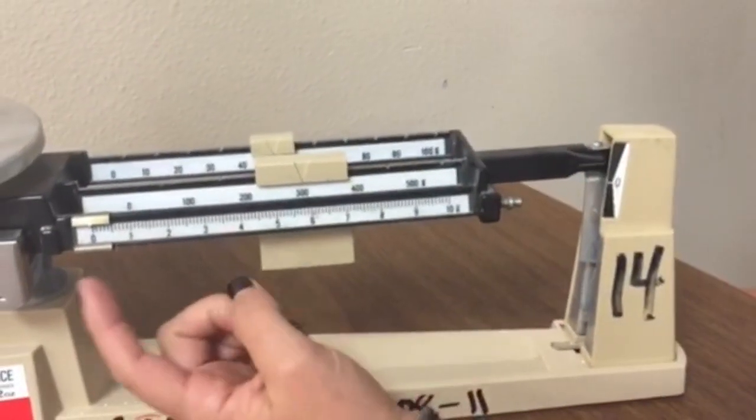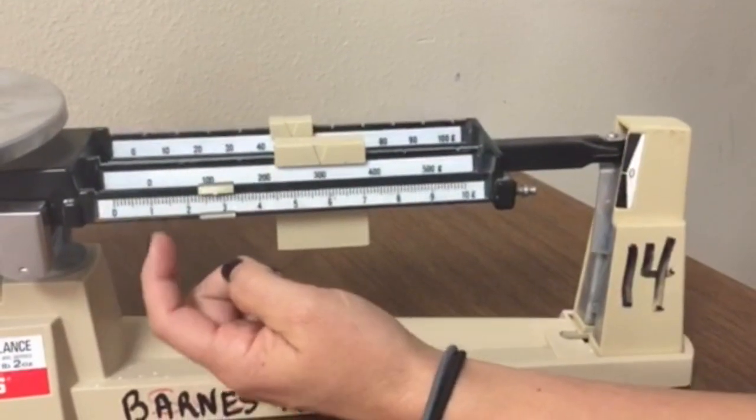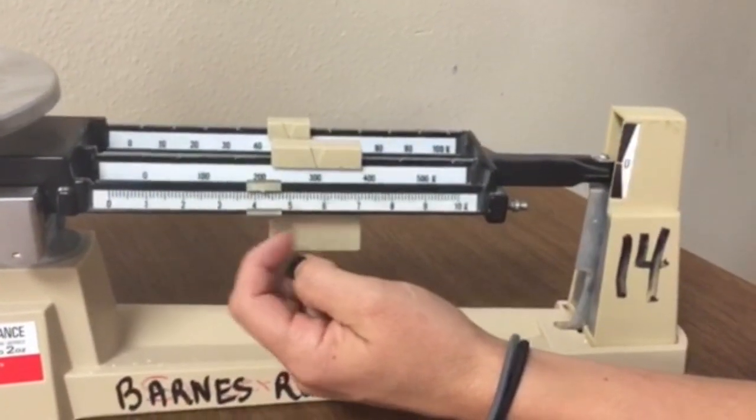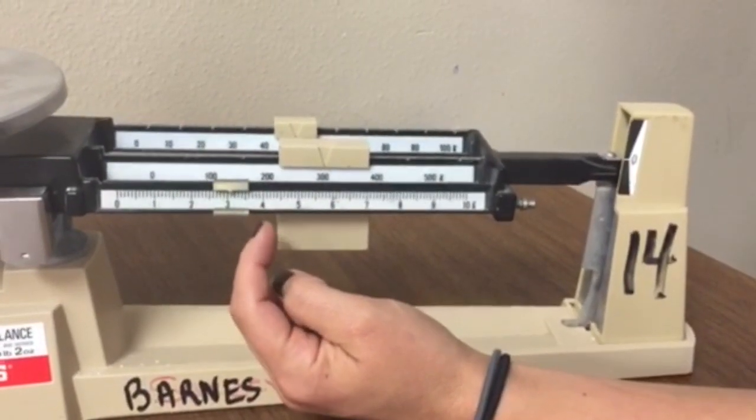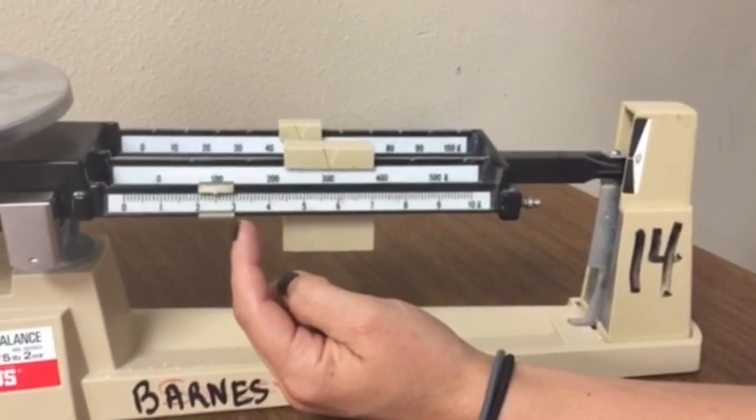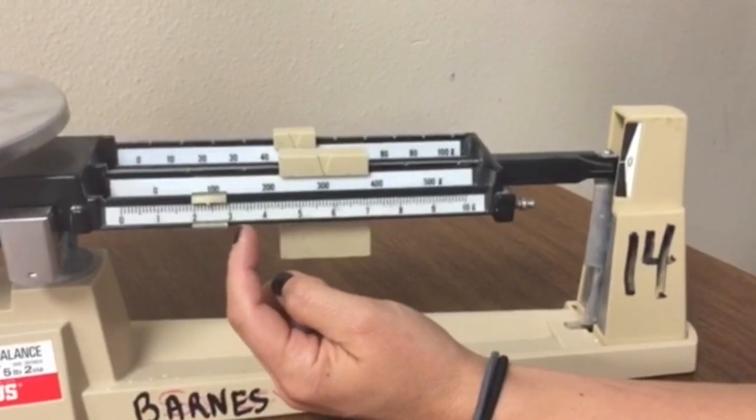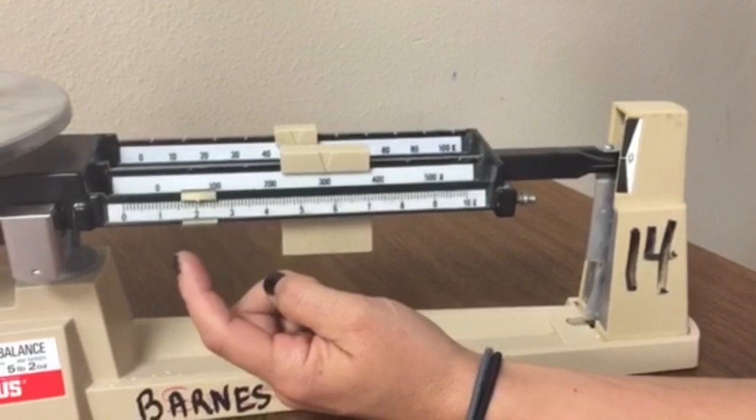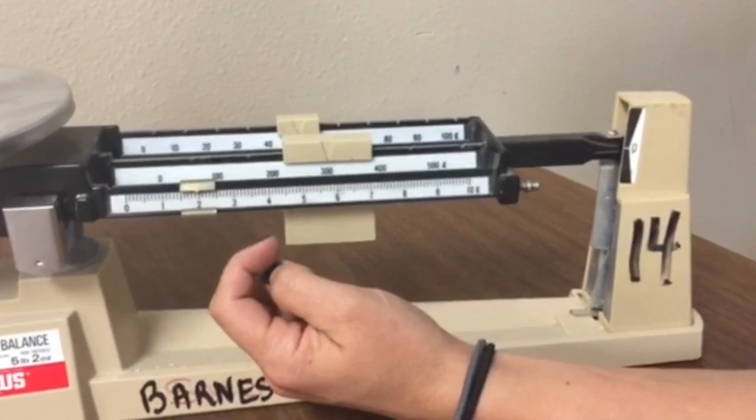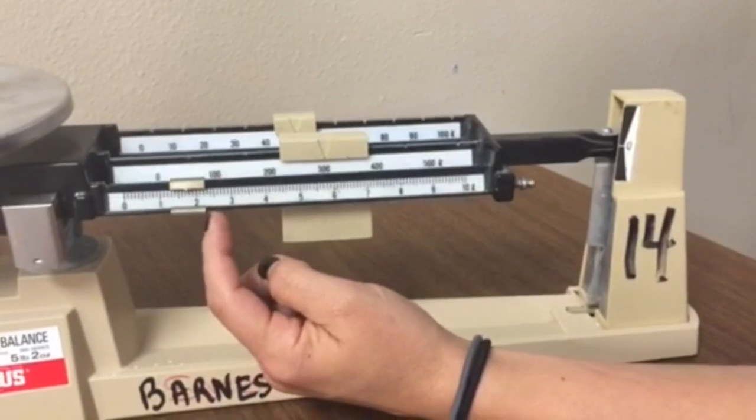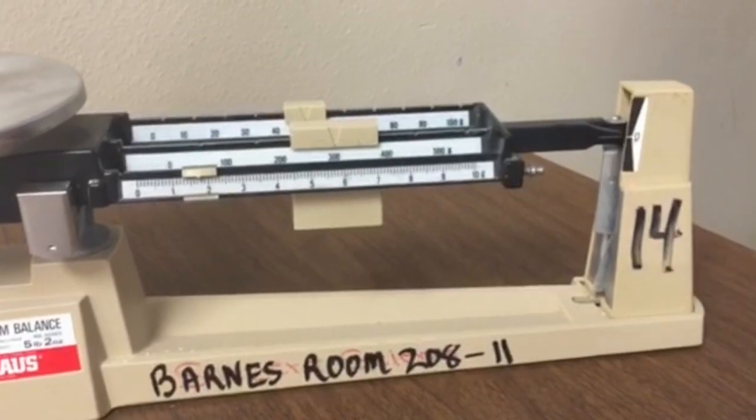Now I'm going to go to my ones and all the way to the tenths. Still too much, a little too much, so I'm going to make sure that it's balanced in the middle. Okay. So there it is, balanced in the middle.